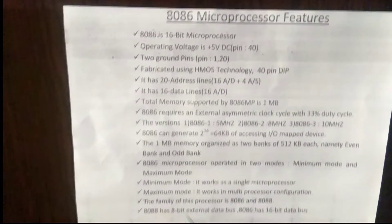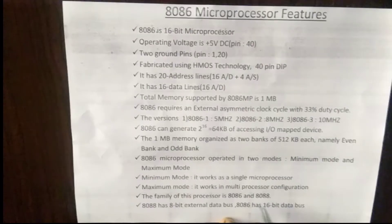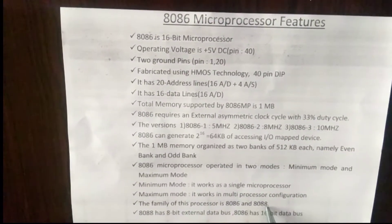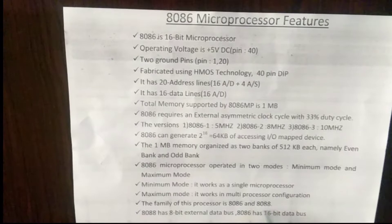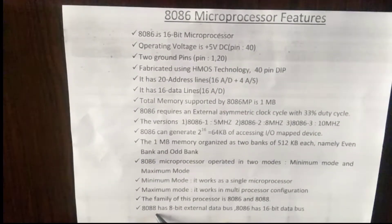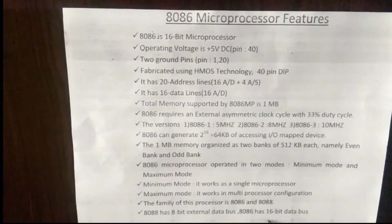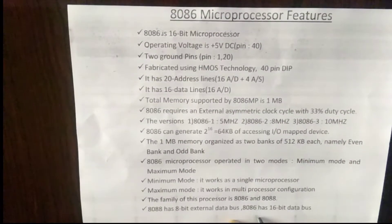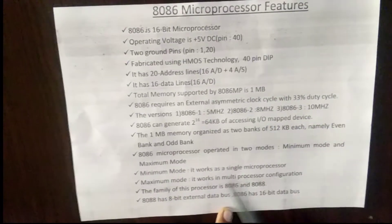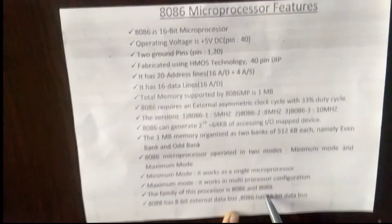The 8086 microprocessor has a sibling: the 8088. The main difference between the 8086 and the 8088 is that the 8088 works on an 8-bit external data bus, whereas the 8086 microprocessor works on a 16-bit data bus.